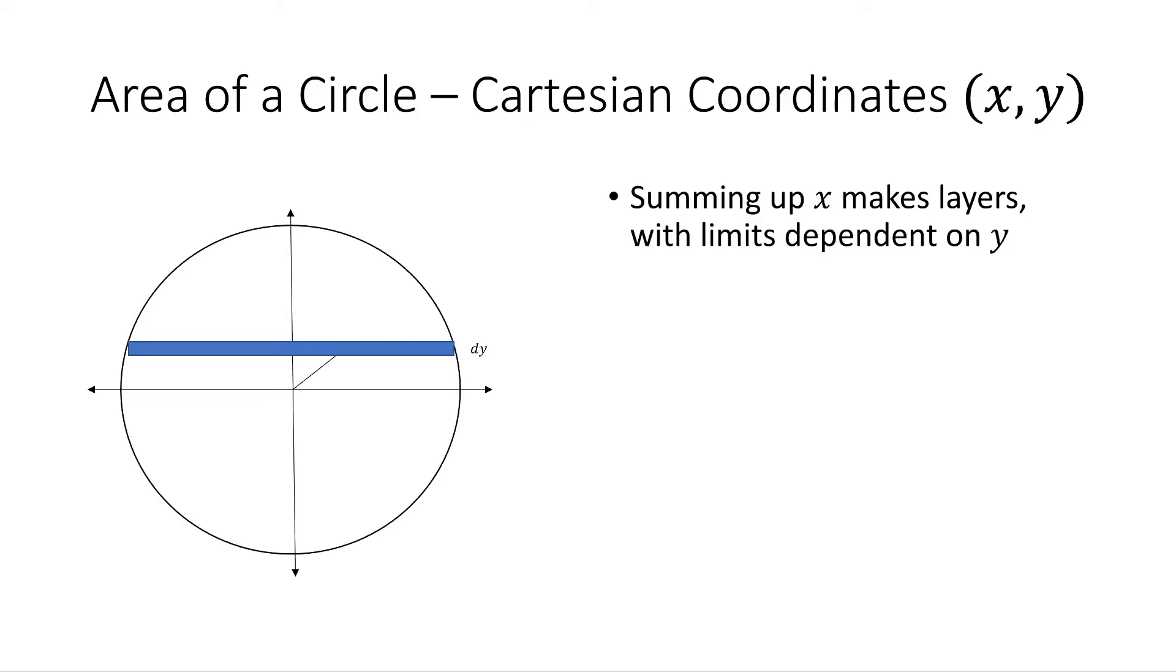So doing the layer method, we're going to sum up x. Its limits are dependent on y. And to determine those limits, we have to think about the relation between x and y along the circle. We can relate any point x and y with this relation, where r is the distance from the origin. So r squared equals x squared plus y squared. It's going to form some triangle wherever we pick a point.